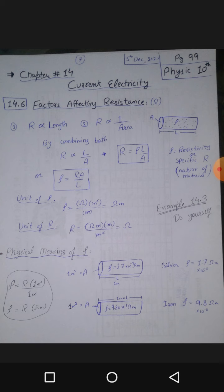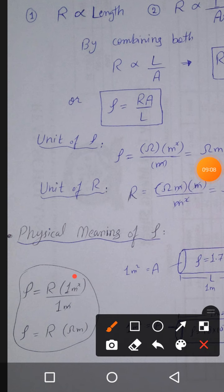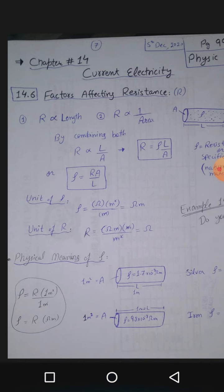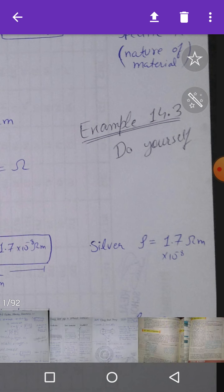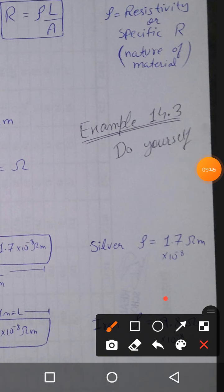Resistivity equals resistance when the wire has one meter square area and one meter length. Resistivity tells you how many ohms a wire of one-meter-square area and one-meter length provides to current — that is its resistivity. One meter of iron with one-meter-square area provides more resistance compared to one meter of silver conductor with one-meter-square area.